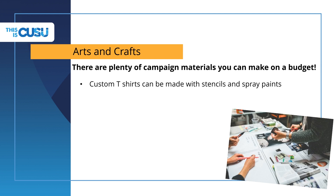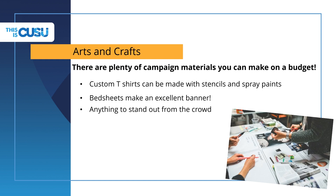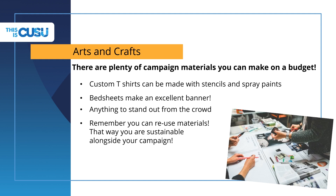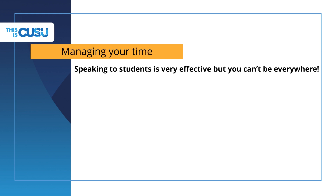There are some campaign materials that can be made on a budget and we can even help you with some. If you want some custom t-shirts, you can make these with stencils and spray paints using old t-shirts you may have lying around — this is much cheaper than buying custom online versions. Bedsheets are very useful if you want to make a banner on a budget. Be sure to reuse as many materials as possible and think sustainably, as lots of flyers that get handed out often end up in the bin.